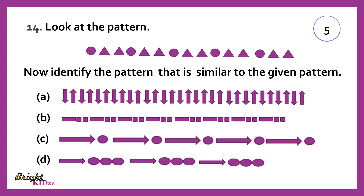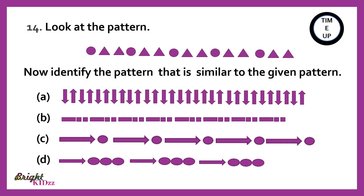Look at the pattern and identify the pattern that is similar to the given pattern. The pattern is: one square, two triangles; one circle, two triangles; one circle, two triangles. We have to find a pattern with a 1-to-2 ratio. Here we can see: one rectangle, two squares; one rectangle, two squares. So this is the similar pattern.